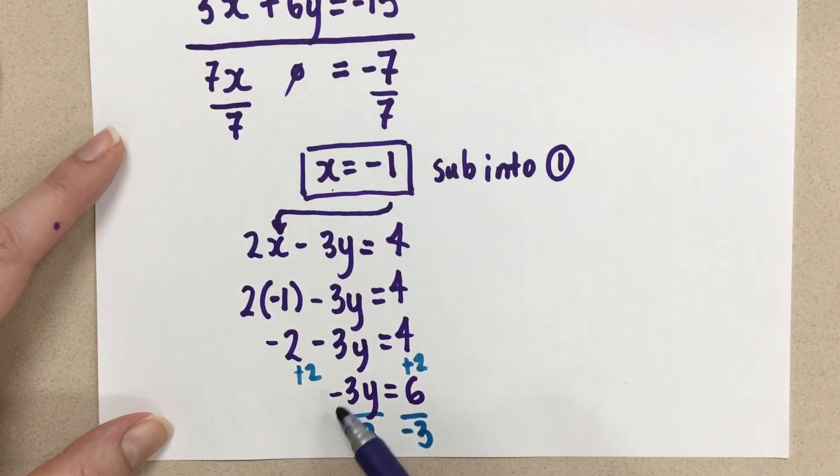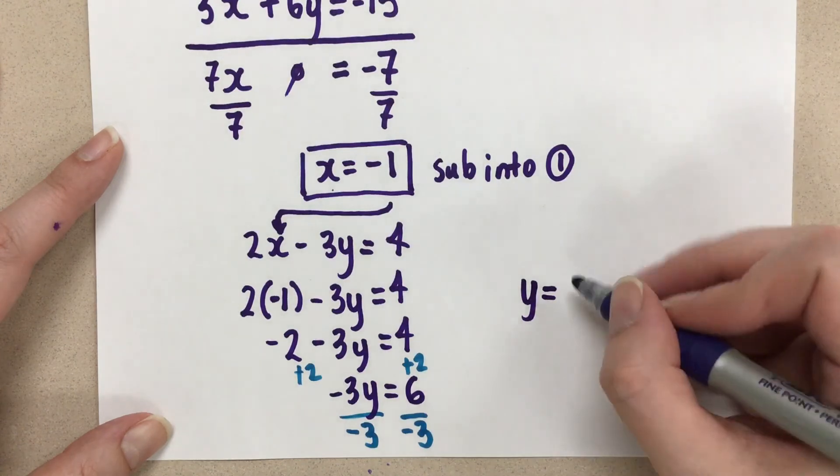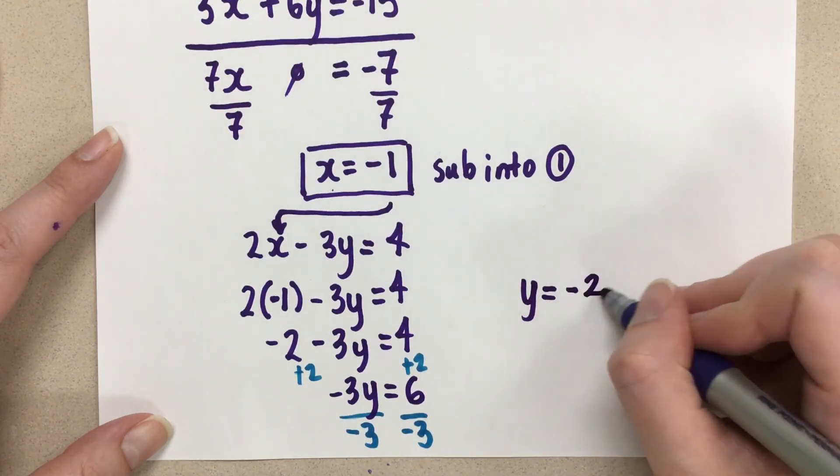And then we're left with y equals 6 divided by negative 3, which is negative 2.